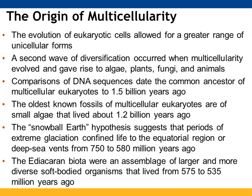Multicellular organisms arose as the evolution of eukaryotic cells allowed for a greater range of unicellular forms. An additional wave of diversification occurred when multicellular cells evolved, giving rise to algae, plants, fungi, and animals. Comparing DNA sequences, the common ancestor of multicellular eukaryotes dates back about 1.5 billion years ago, and the oldest known fossils of these eukaryotes are small algae that lived about 1.2 billion years ago. The snowball Earth hypothesis suggests extreme glaciation confined life to equatorial areas or deep sea vents between 750 and 580 million years ago.